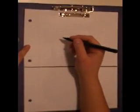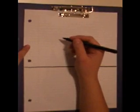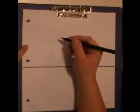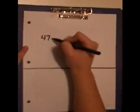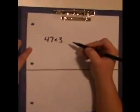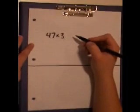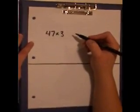Compensation strategies for multiplication allow students to manipulate numbers to make them easier to multiply. For instance, the problem 47 multiplied by 3 can be changed to an easier problem and then an adjustment can be made to compensate for this change.